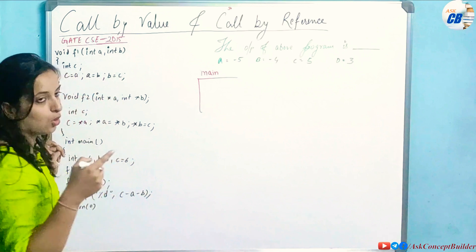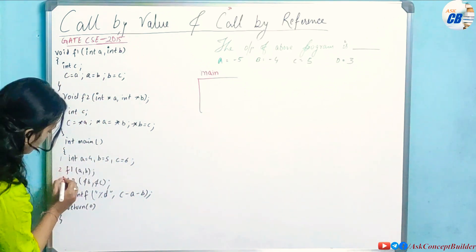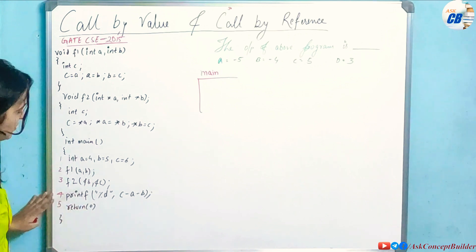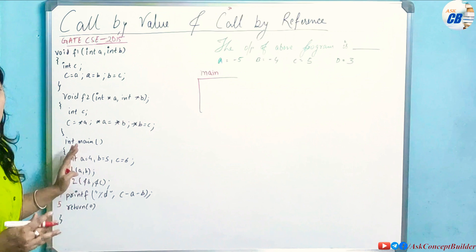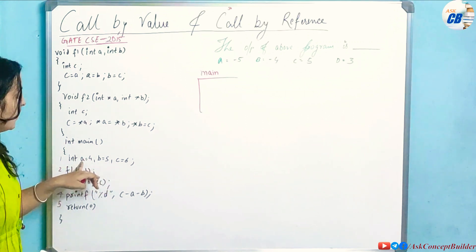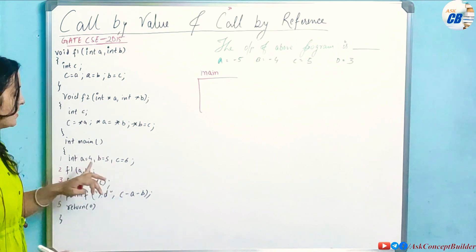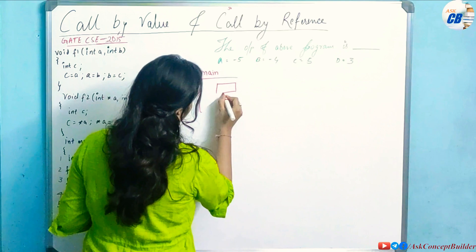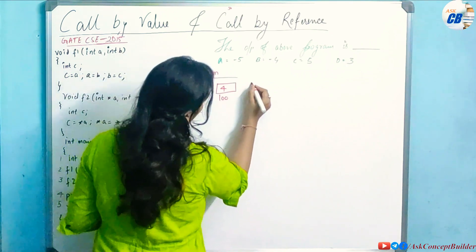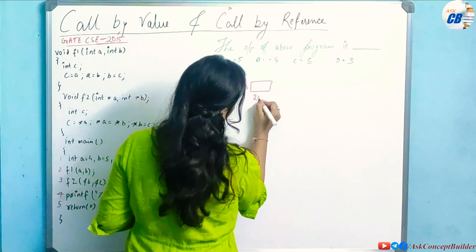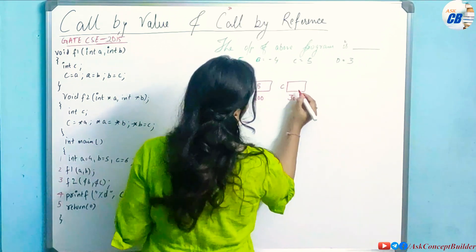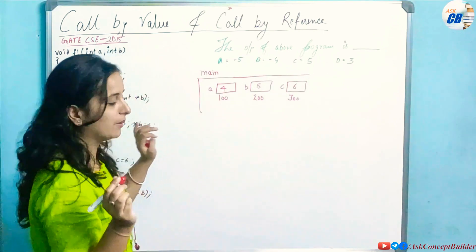We execute all instructions in the main function — five statements to complete execution. First statement: int a=4, b=5, c=6. In memory, a is initialized with value 4 at memory location 100, b at location 200 with value 5, and c at location 300 with value 6. Three variables are initialized in the first step.